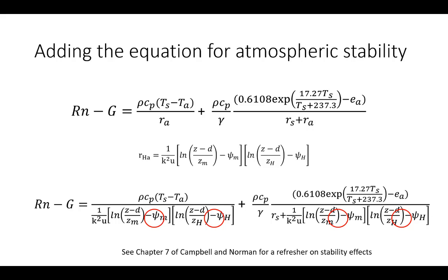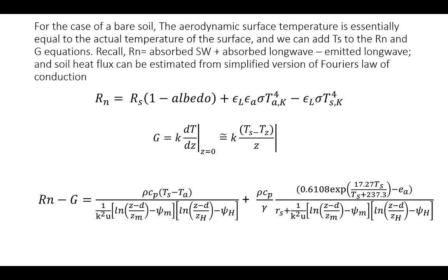Moving to a more complete form, we can also add equations for net radiation and soil heat flux that include surface temperature. Net radiation is absorbed shortwave plus absorbed longwave minus emitted longwave. Soil heat flux G can be approximated using Fourier's law in discretized form: if we know the thermal conductivity of the soil, the surface temperature, and the temperature just below the surface T_z, we can solve for soil heat flux, and substitute all of these back into our equation.